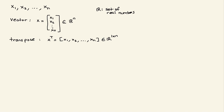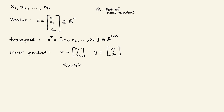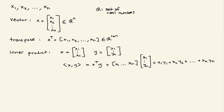Now I would like to talk about inner product. Let's have two vectors x = [x1, ..., xn] and y = [y1, ..., yn]. The inner product is shown as <x, y> or simply x-transpose times y. When you multiply these vectors with each other, you get x1*y1 + x2*y2 + ... + xn*yn. We can also write this using summation notation: sum from i=1 to n of xi*yi.